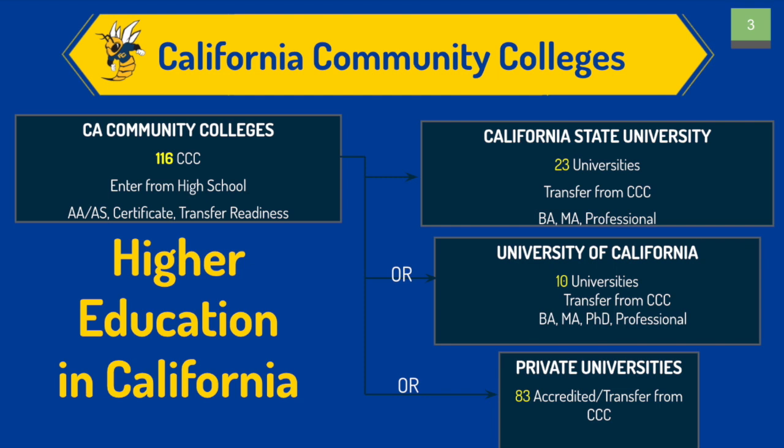There are many higher education options after high school, as you can see from this diagram. There are 116 community colleges that will allow you to get an associate of arts degree, associate of science degree, a certificate, or complete your transfer requirements for your four-year university. As you can see, there are 23 Cal State universities, 10 UCs, and 83 private universities where you can complete your bachelor's, master's, and beyond.